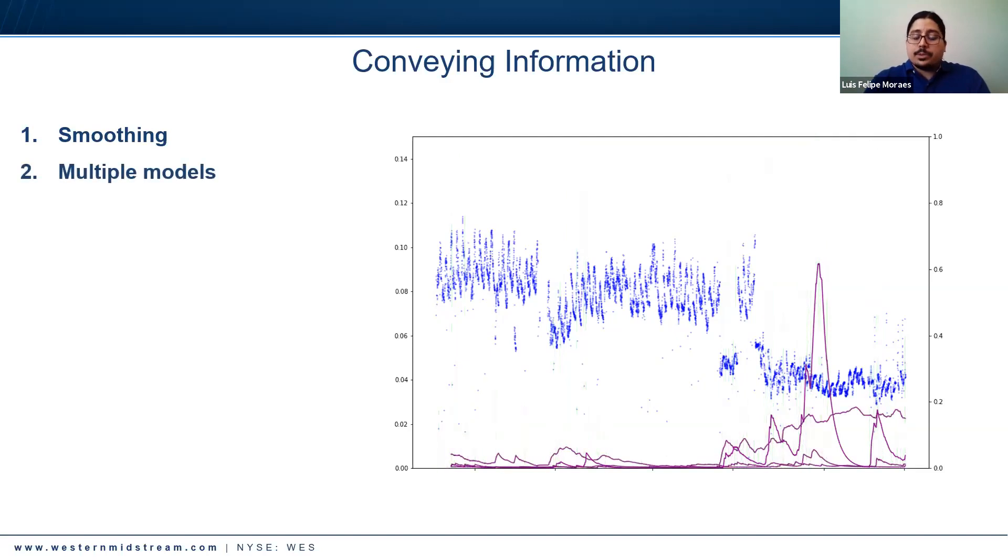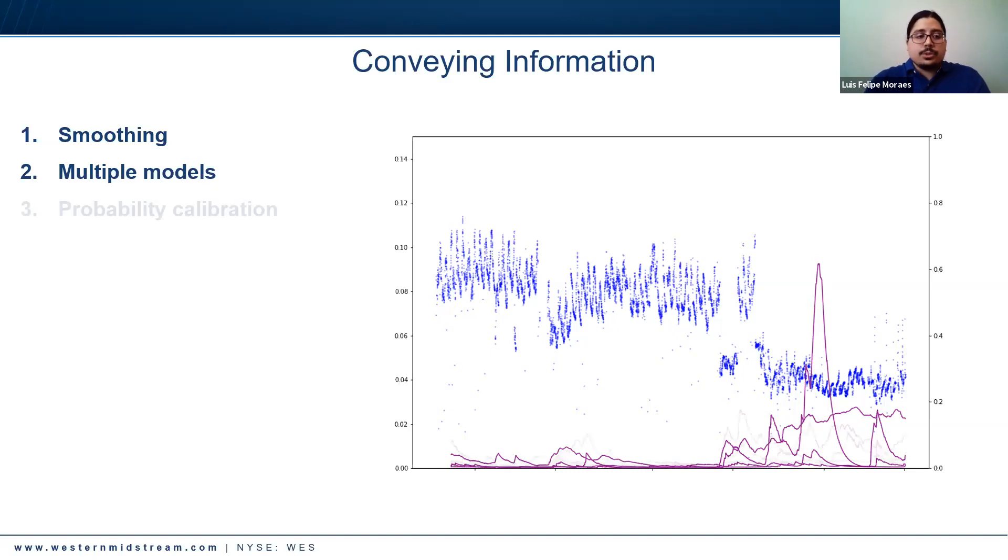Another thing we did was provide the output of multiple models, because no single model - it was hard to justify saying this is the model you should be looking at when the models weren't consistent enough with their results. What we've found as a good stopgap was to provide the output of many models. However, another step we had to do because of this was to calibrate their outputs. We perform probability calibration so that our models are using the same scales if you will, and this is important to interpret the output.